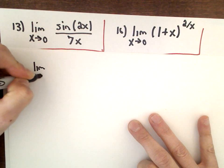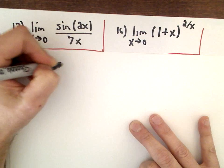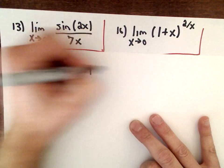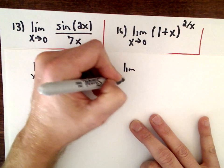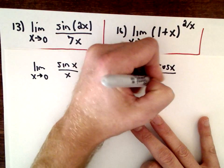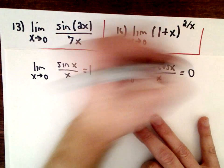This is what I'm going to use. So there's one that says the limit as x approaches 0 of sine x over x equals 1. There's another one that says the limit as x approaches 0 of 1 minus cosine x over x equals 0.